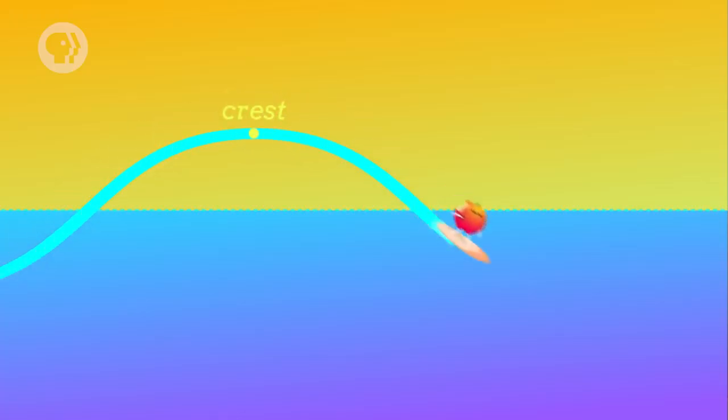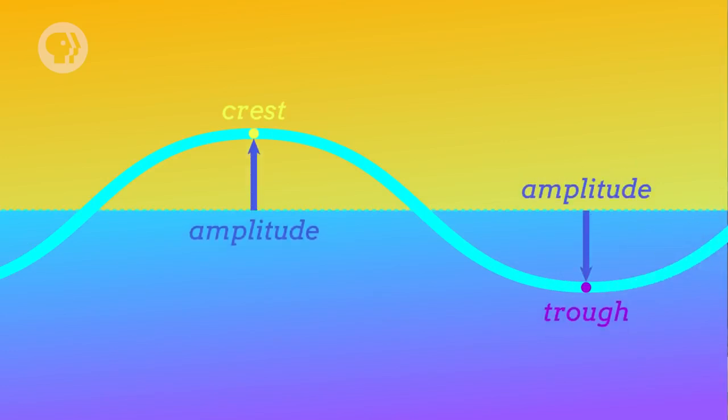This up and down motion gradually ripples outward, covering more and more of the trampoline. And the ripples take the shape of a wave. Waves are made up of peaks with crests, the bumps on the top, and troughs, the bumps on the bottom. They have an amplitude, which is the distance from the peaks to the middle of the wave.